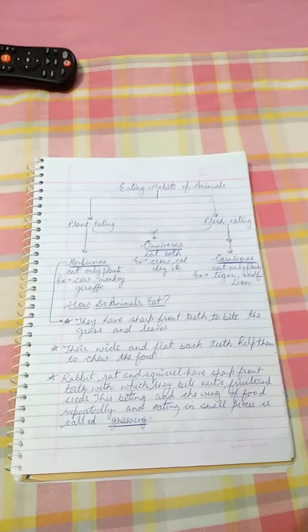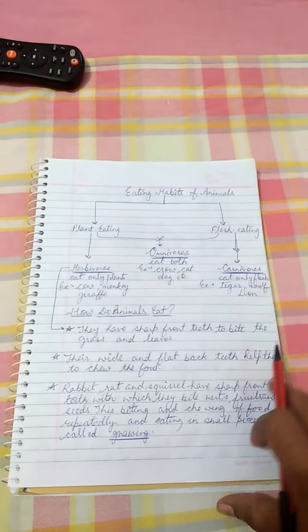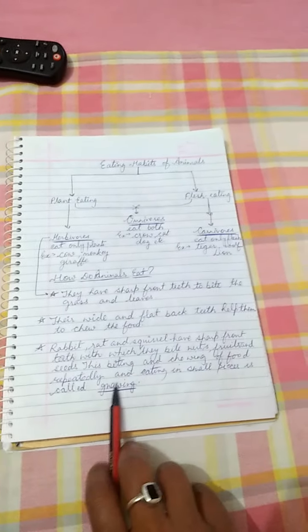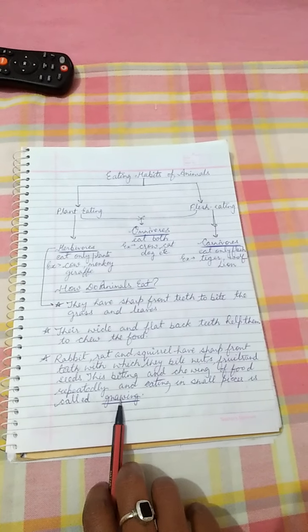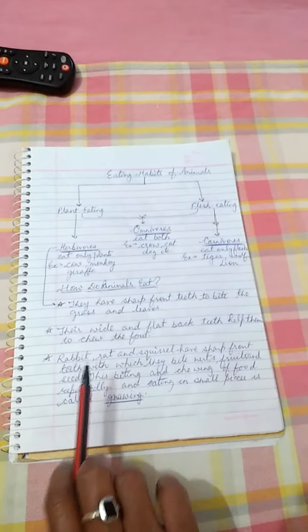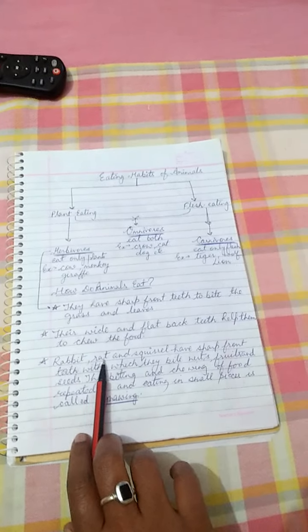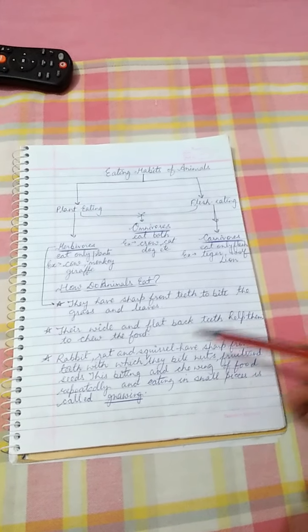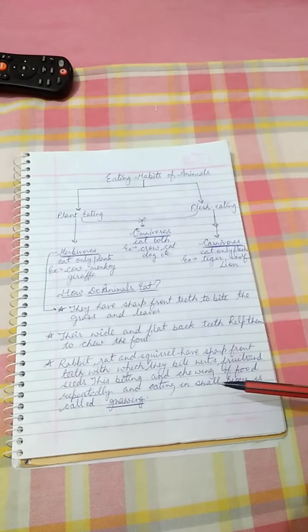This biting and chewing the food repeatedly and eating in smaller pieces is basically known as gnawing.